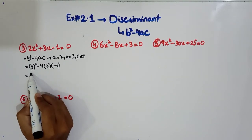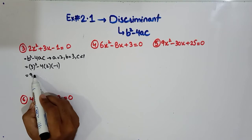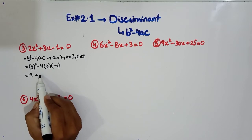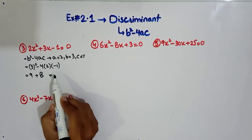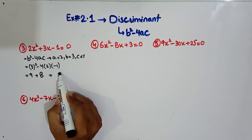Now we will solve this. 3 square, 9, minus positive 4 to the 8. 9 and 8 will be 17.